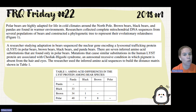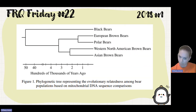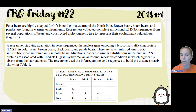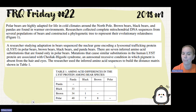Polar bears are highly adapted for life in cold climates around the North Pole. Brown bears, black bears, and panda bears are found in warmer environments. Researchers collected complete mitochondrial DNA sequences from several populations of bears and constructed the phylogenetic tree to represent their evolutionary relatedness, as seen in figure one. A researcher studying adaptations in bears sequenced the nuclear gene encoding a lysosomal trafficking protein, LYST, in polar bears, brown bears, black bears, and panda bears. There are seven inferred amino acid substitutions found only in polar bears. Mutations that cause similar substitutions in the human LYST protein are associated with an autosomal recessive condition in which pigment is absent from the hair and eyes. The researcher used the inferred amino acid sequences to build a distance matrix shown in table one.